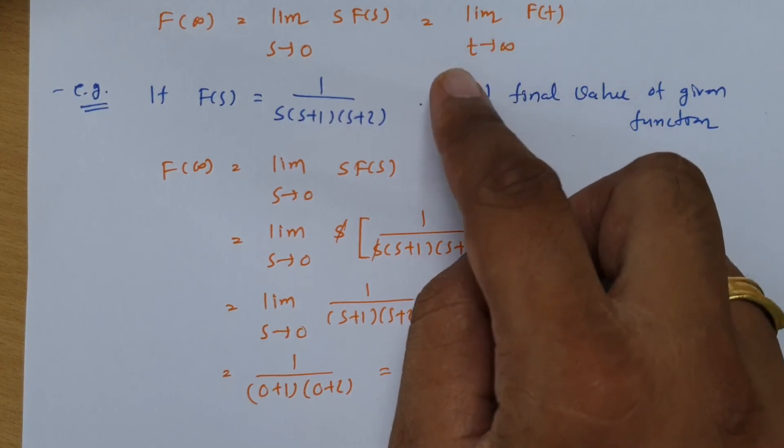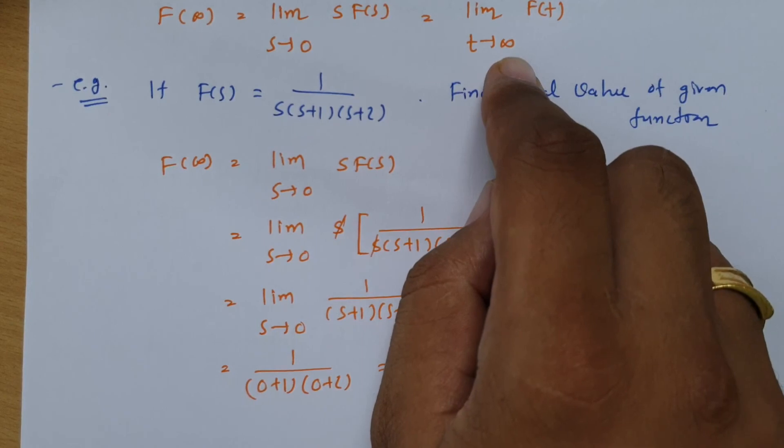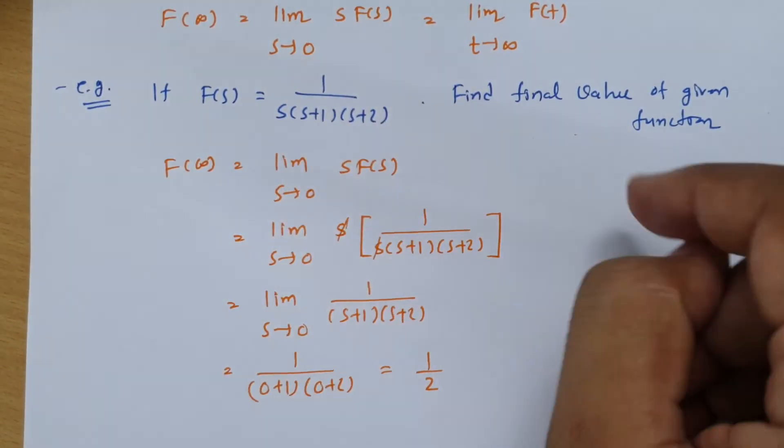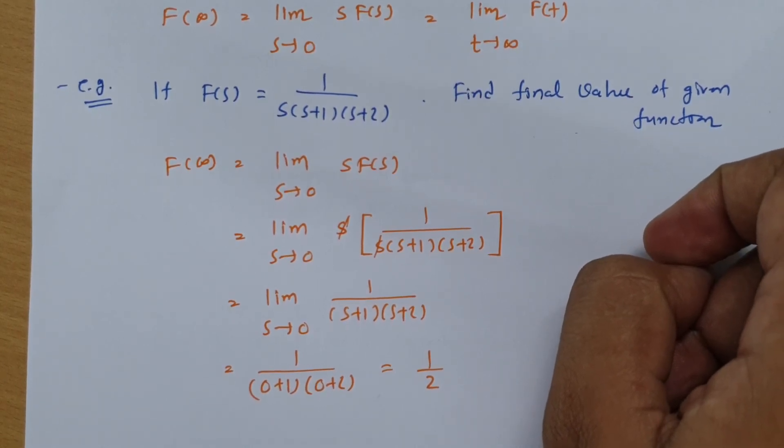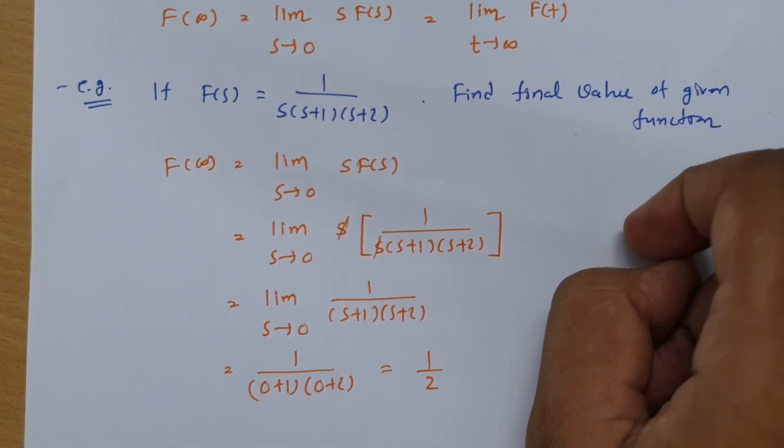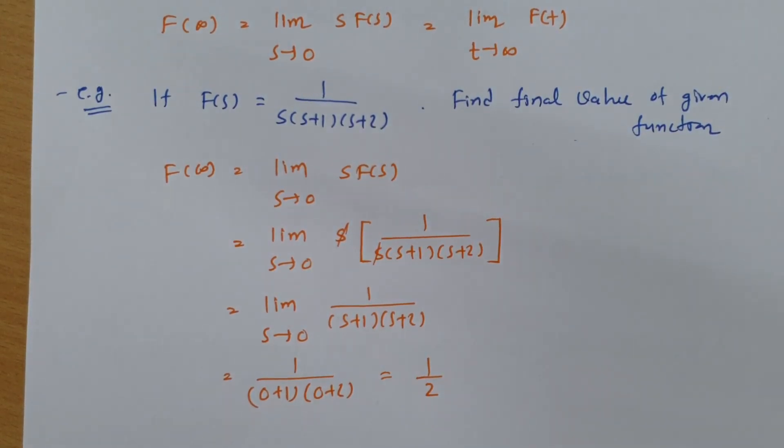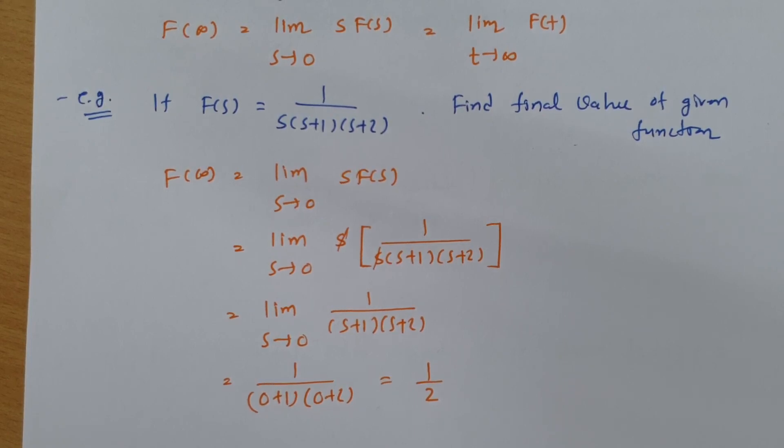So for final value, time t should be going towards infinite, and s should be going towards 0. This is how we can apply these formulas to calculate initial value and final value. Thank you so much for watching this video. Please give your valuable suggestions. Definitely based on it, in future I will make videos to sort out all those queries. Thank you so much.